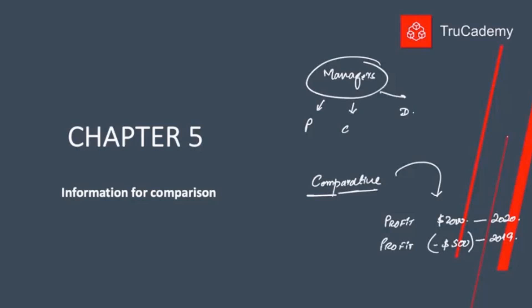There are lots of different techniques to produce comparative information for managers. For example, the most important one is variances — variances basically mean the differences. Then after that, exception reporting, and so on. All these techniques we will discuss in this chapter.